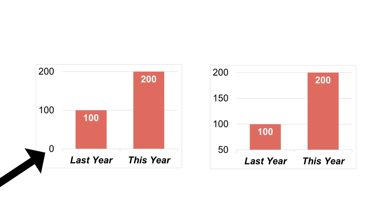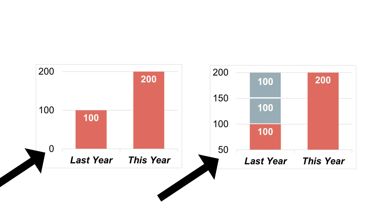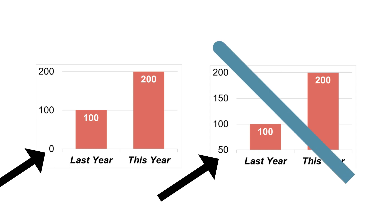If we compare it to a chart where the axis begins with 50, we lose the ability to accurately compare the two data points. Here, 100 is incorrectly displayed as one-third of 200.